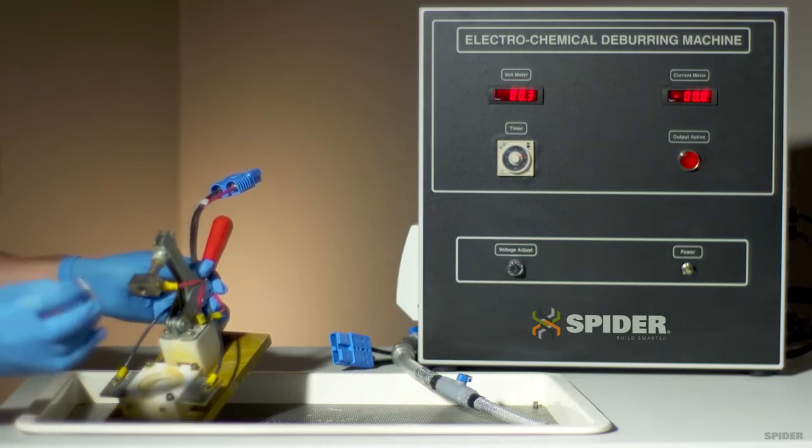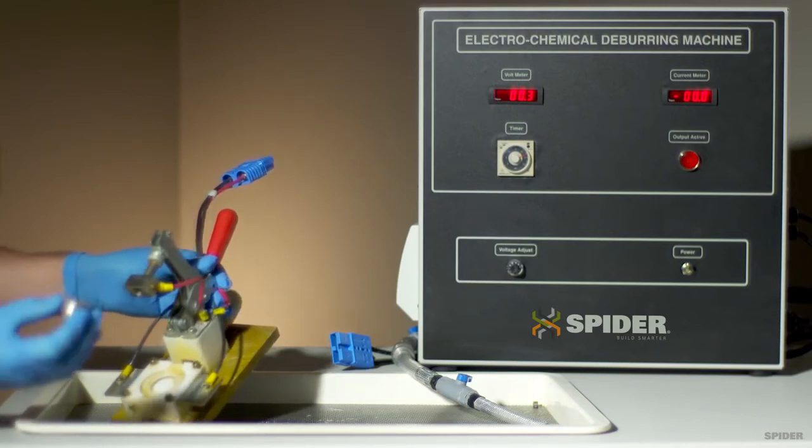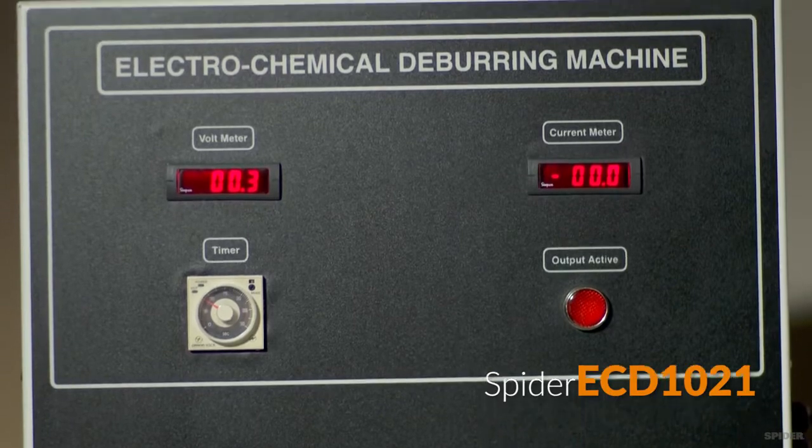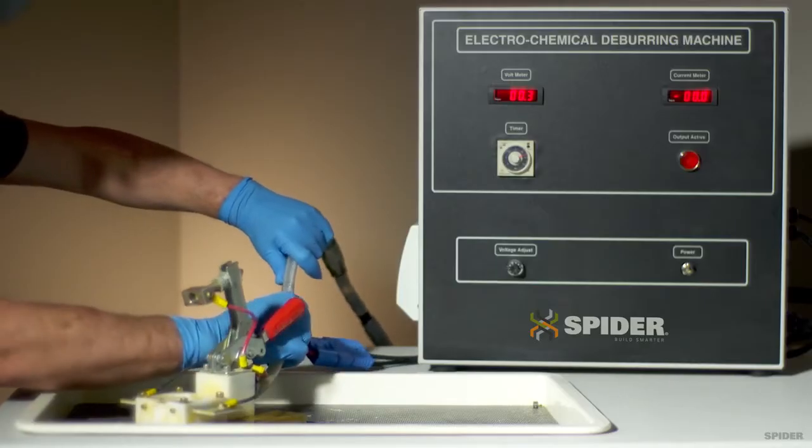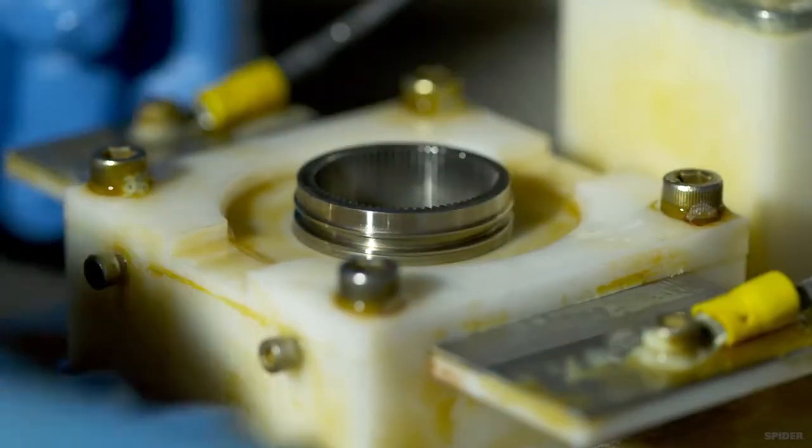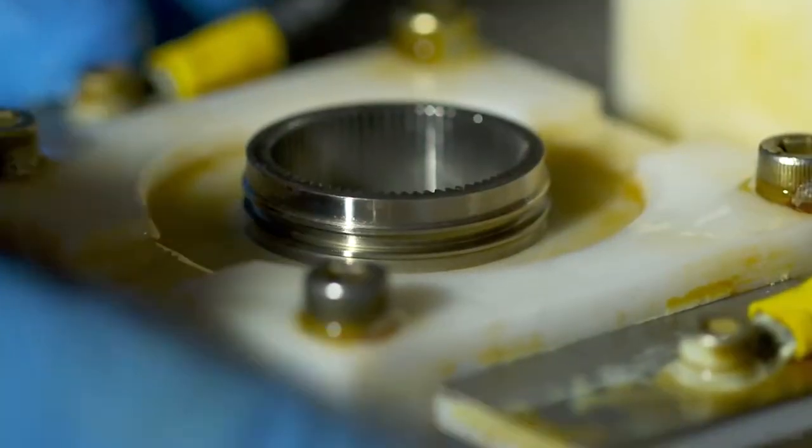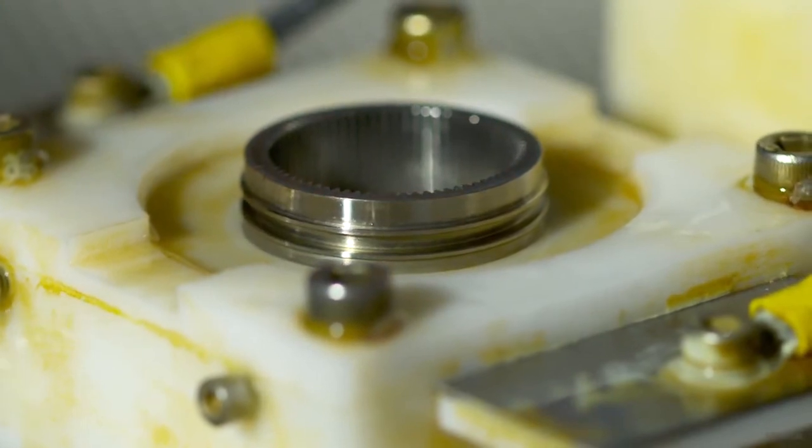For example, here's a typical fixture we'll use in this case for deburring a gear with the Spider ECD model 1021 machine. After plugging it in and connecting the electrolytic fluid, the part that needs deburring goes into the fixture, and the electrodes slide in to a designed gap between them and the part.